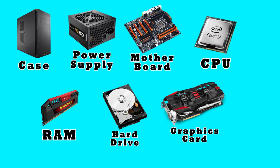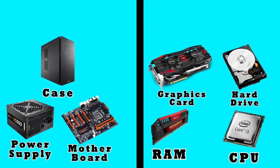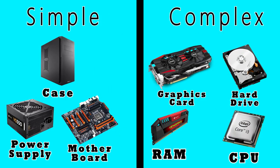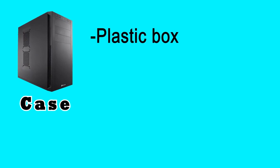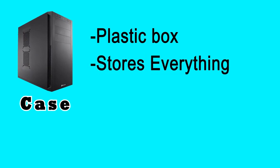It may seem daunting at first, so let's separate these into two categories: simple ones, and the more complex ones. For starters, let's look at the case. The case is nothing more than a big hunk of plastic that houses everything else. Some of them have more or less physical space, some have different parts for screws, but at the end of the day, all the case really does is provide a nice enclosed system for everything else.